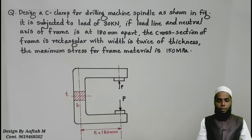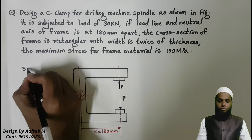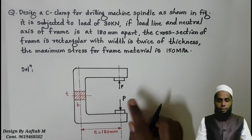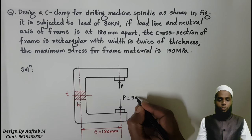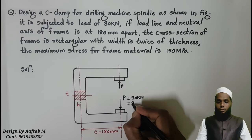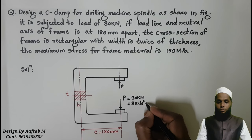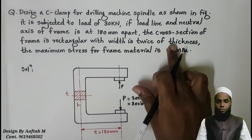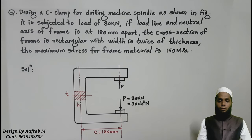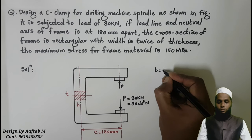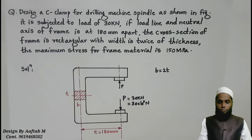Now I am going to solve this question. First of all I will write the given data in the solution. So we have P value as P equals 30 kN. In order to convert it into newton, we will multiply it by 10 raised to 3 newton. Now the ratio of width and thickness, we have width V equals 2 times of T.